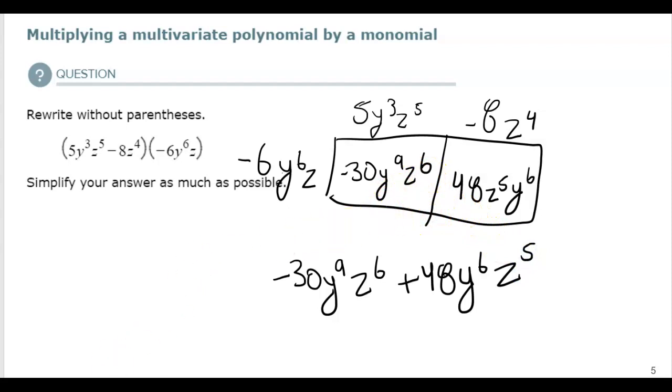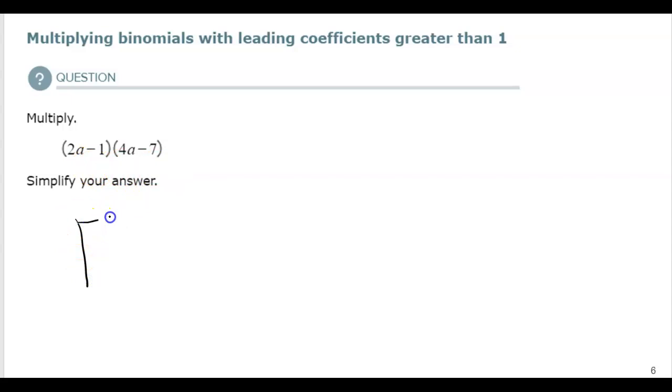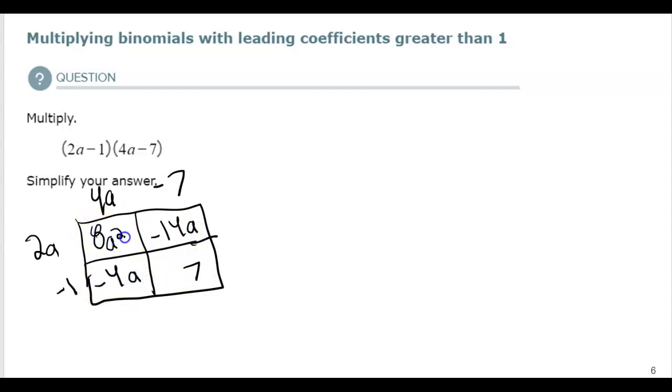And that's what that would look like once we combined those. So, now I have a 2 by a 2. So, if I were to do this with a box, I'd have my 2a, my minus 1, and my 4a, my minus 7. And I'd fill in each box. So, then when I write these out, I try to think about what like terms I have that I can combine. Those are both like terms because we both have an A. So, that's what that would look like.